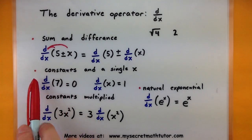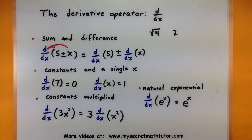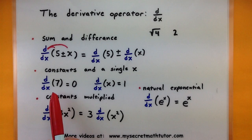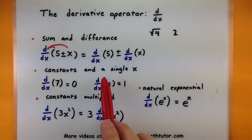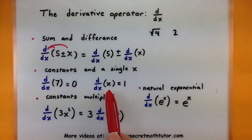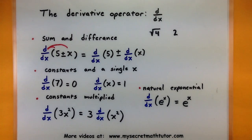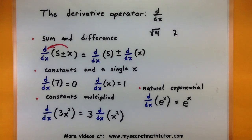The next rule is what to do when you have the derivative of a single constant — maybe the derivative of 7, 5, or 6. When you take the derivative of a single constant you get 0. Keep in mind that it's completely different if you take the derivative of a single x; that derivative is actually 1. When we get to the power rule you'll see what we do for higher powers like x squared and x cubed, but know that for a single x you get 1.